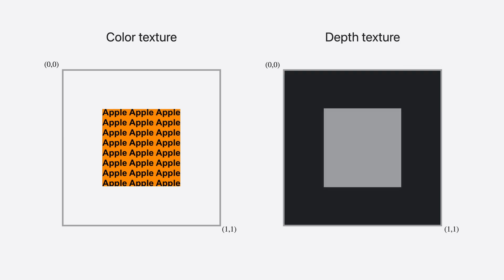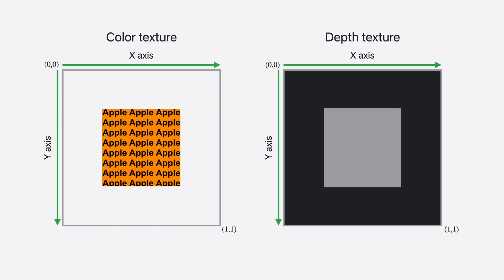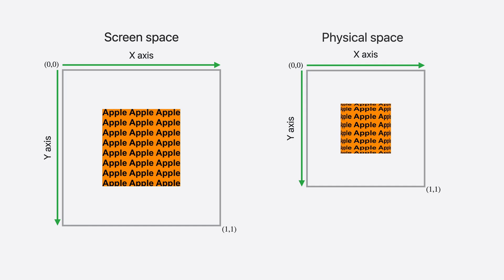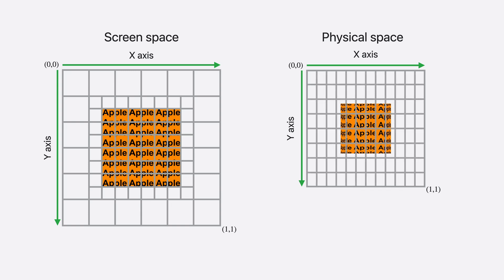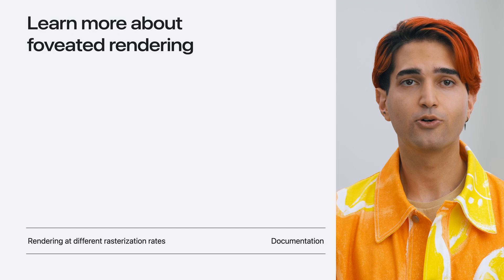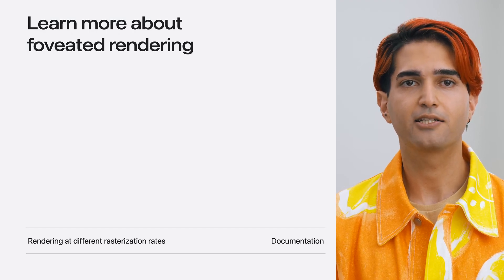Once you have transformed your content from world space to texture coordinate space, this is how the app's drawable color and depth texture would look after rendering. In texture space, the x axis goes from left to right and the y axis goes from top to bottom. Notice that the expected depth values are in reverse Z convention. This is how the drawable textures would look in screen and physical space, given that VisionOS uses a foveated color pipeline. This means the size of the physical space is smaller than the screen space texture dimension. Screen space is where people perceive the values, and physical space is where the actual values are stored in memory. To learn more about foveated rendering, check out Rendering at Different Rasterization Rates at developer.apple.com.